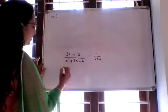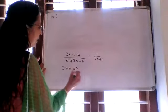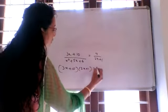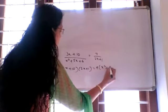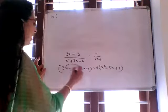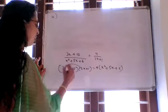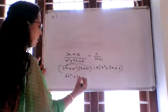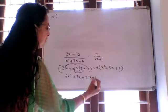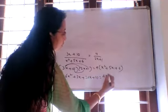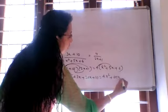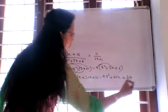Cross multiplying: 3x plus 10 into 2x plus 1 equals 4 into x squared plus 5x plus 6. Expanding: 6x squared plus 3x plus 20x plus 10 equals 4x squared plus 20x plus 24.